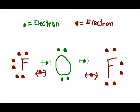Covalent bonds, unlike ionic bonds, share valence electrons. Fluorine and oxygen, as shown here, have seven and six valence electrons, respectively. The oxygen shares two electrons with the two fluorines, and the fluorines share one electron each with the oxygen. After sharing, both the one oxygen and the two fluorines have full outer shells.